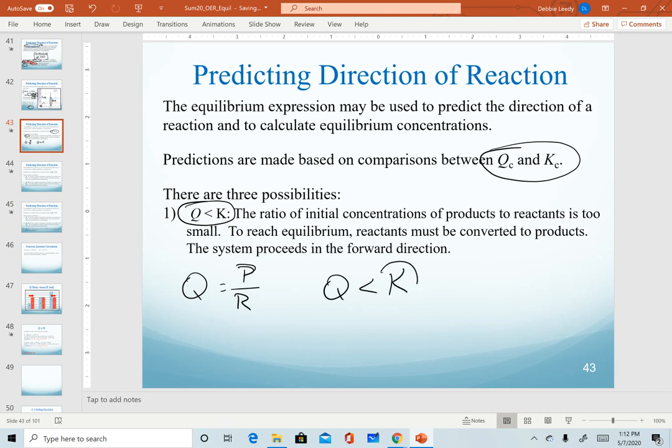Remember that K is the goal of a reaction. A reaction will keep going until it reaches the ratio of products to reactants that gives us the value of K. And so in this scenario, it means that Q needs to increase in order to become K.